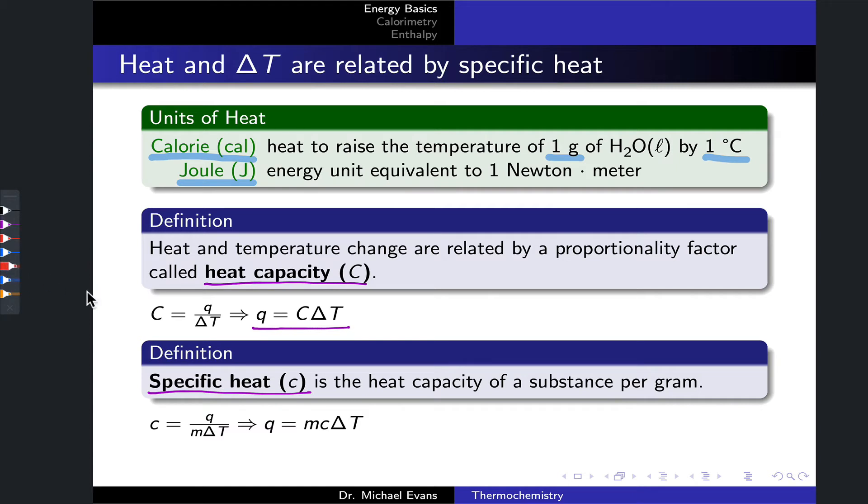And so all we've done to define specific heat, which is represented with a lowercase c, is we've taken the heat capacity and we've divided by the mass of the substance. This defines the specific heat, the heat capacity per gram, per the mass in grams.